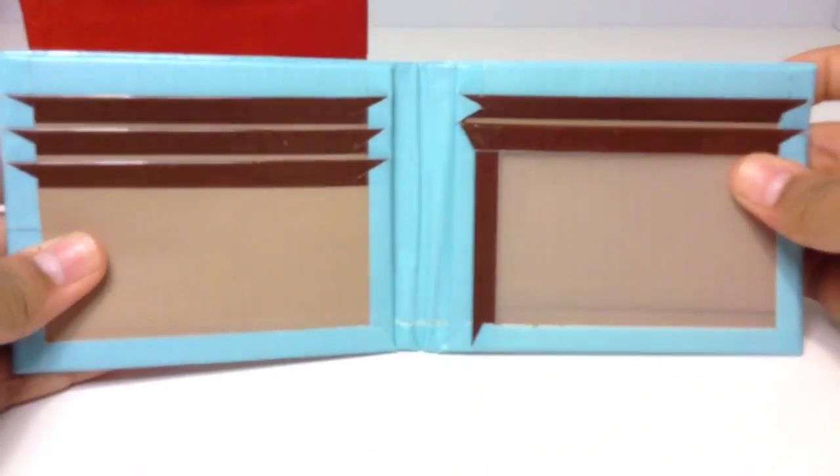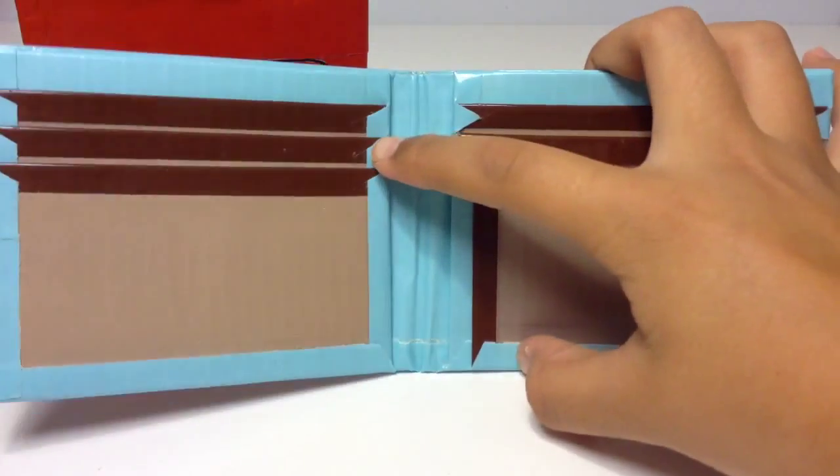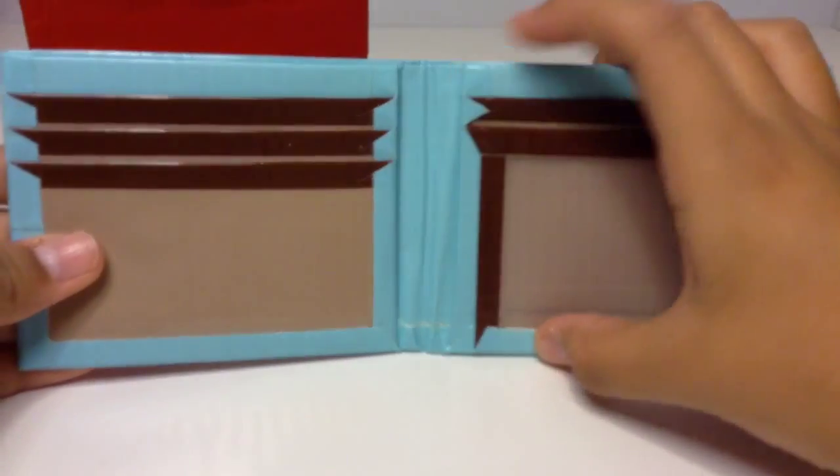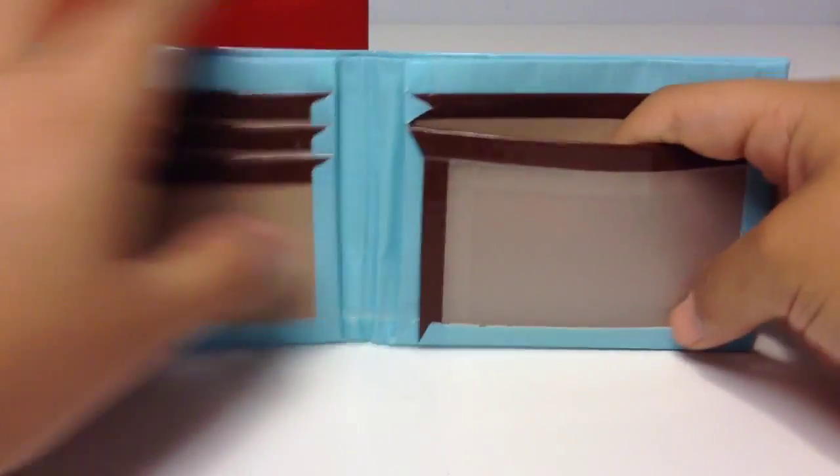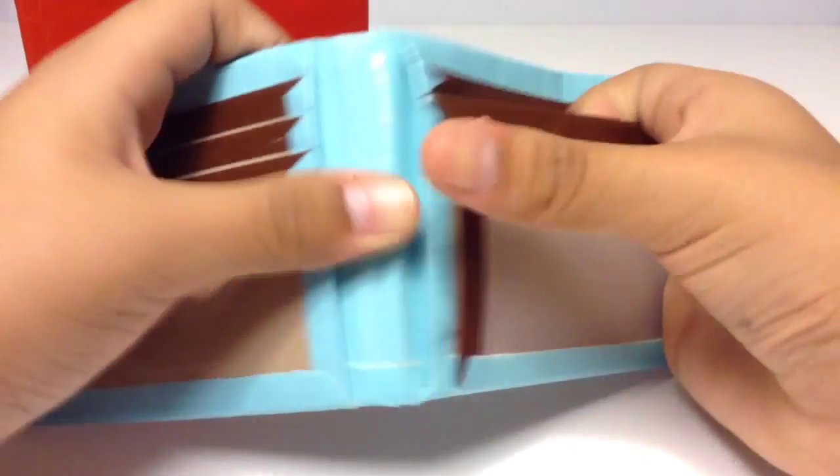And the next wallet that I have is this one. It's beige, brown, and pastel blue. And it's got five card pockets, ID, and two hiddens.